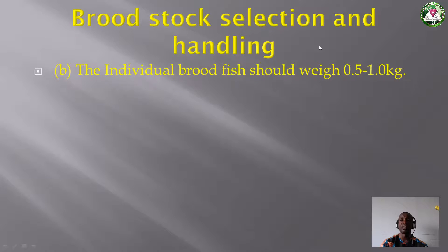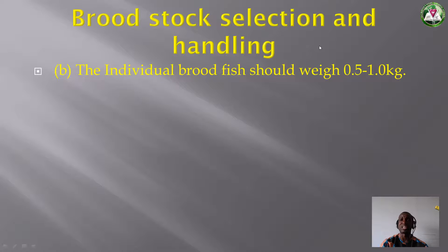The individual broodstock should weigh about 0.5 to 1 kg. Don't use any fish less than 0.5 kg — it's not good for breeding or artificial production. If it weighs more than 1 kg it will be difficult to handle, so use fish between 0.5 and 1 kg.